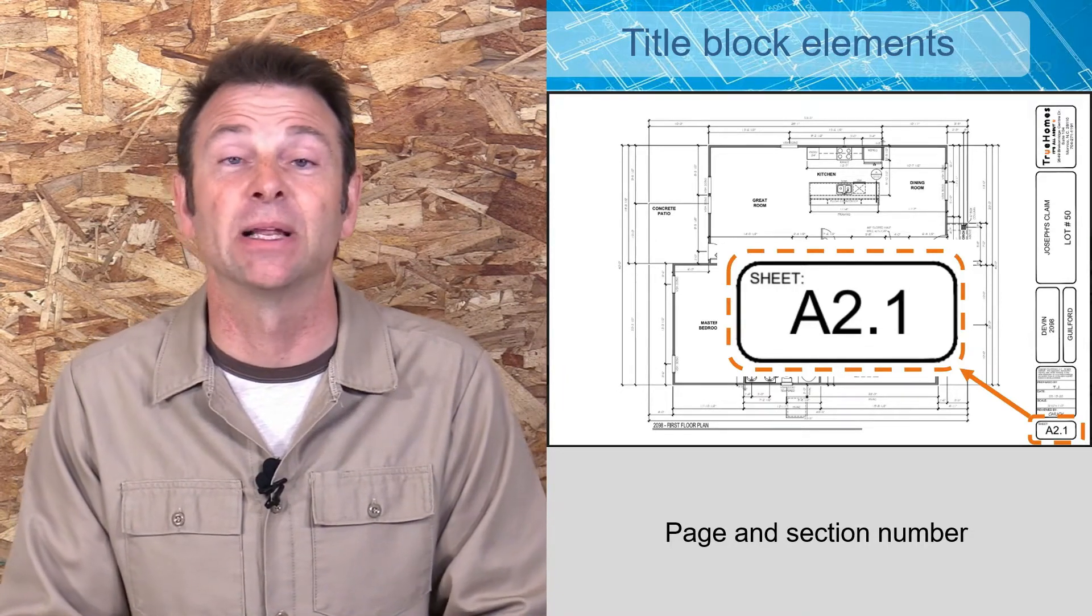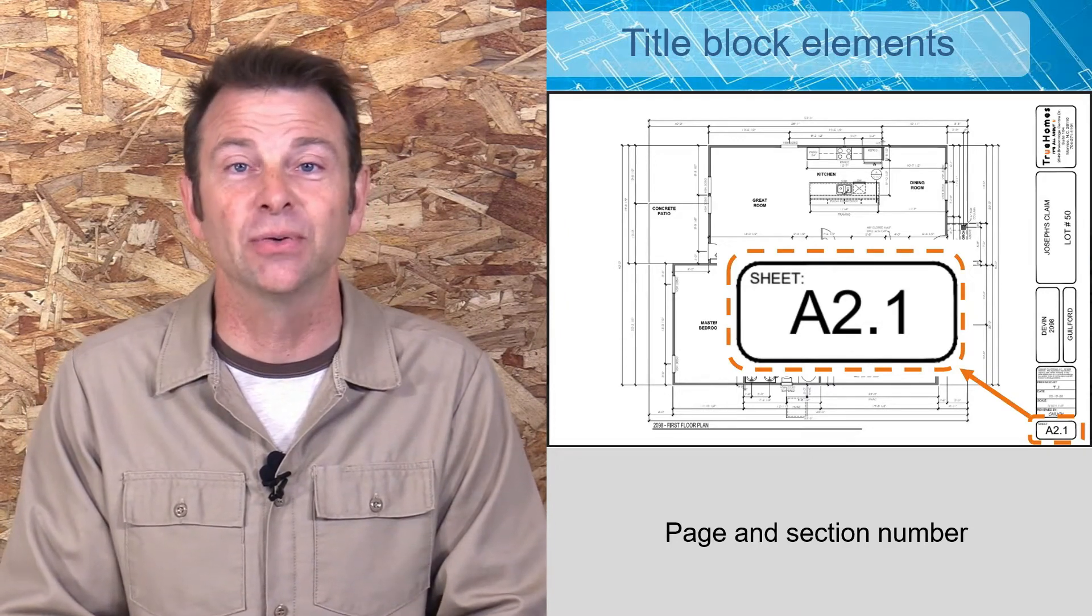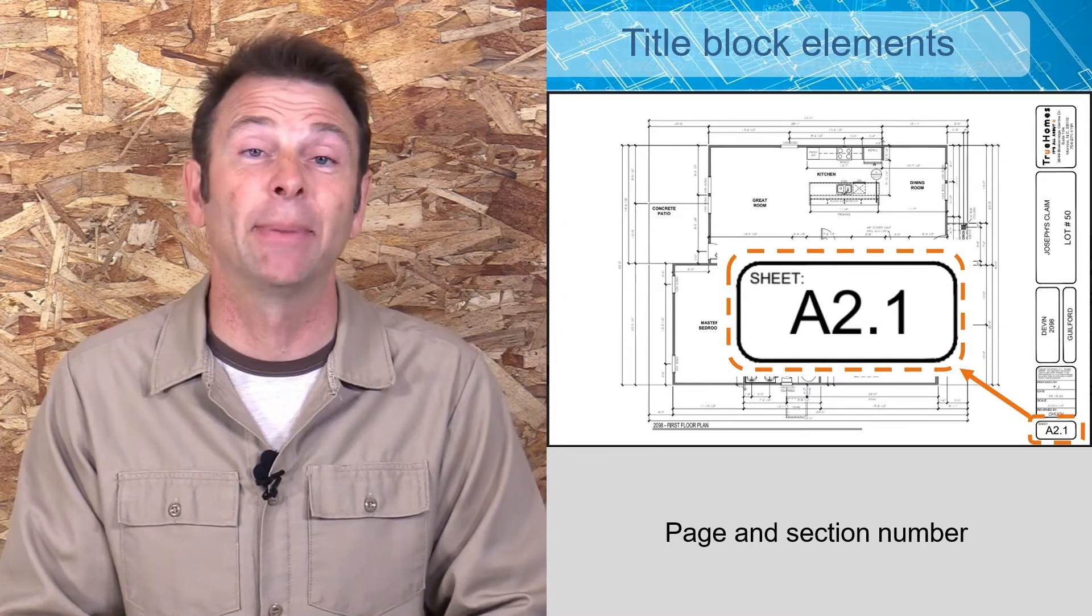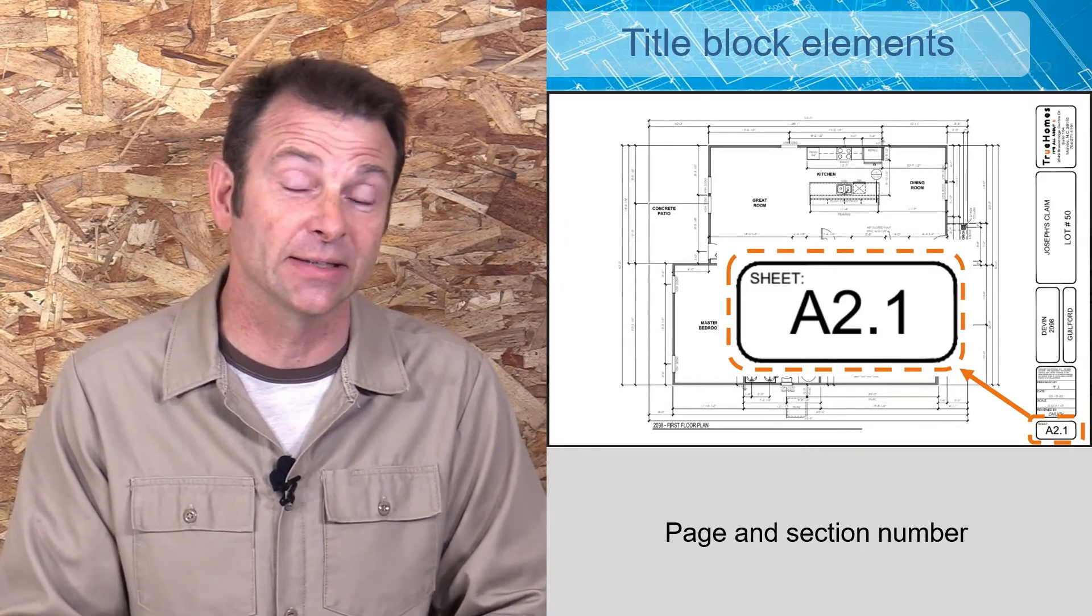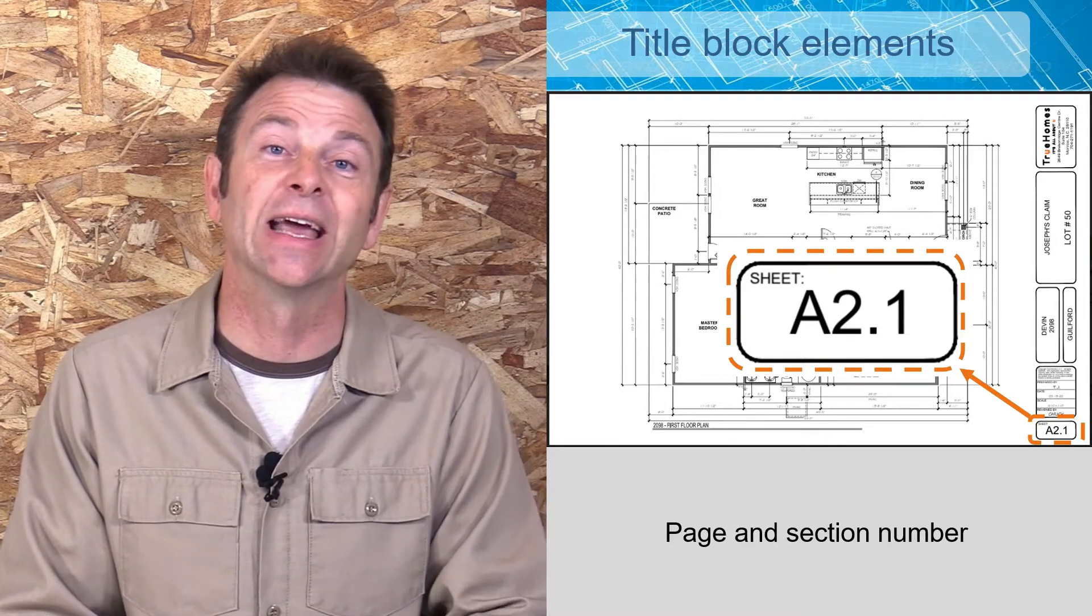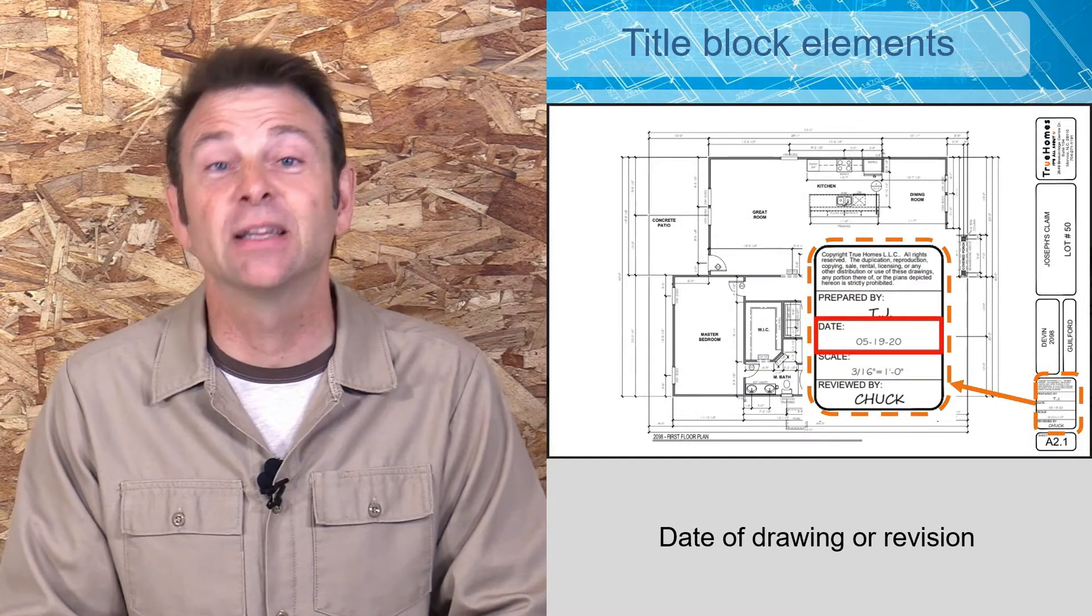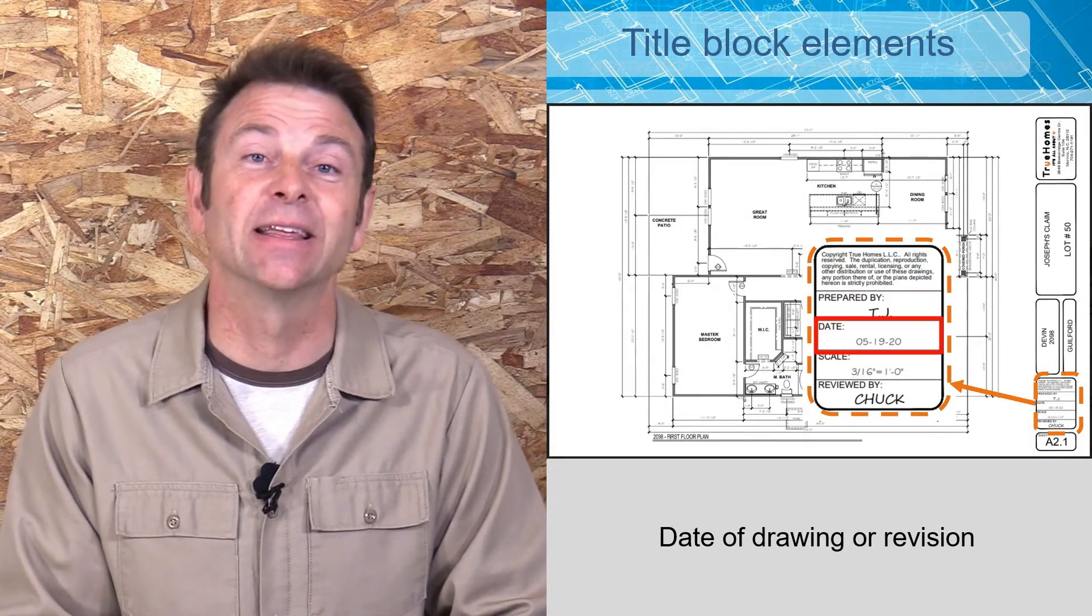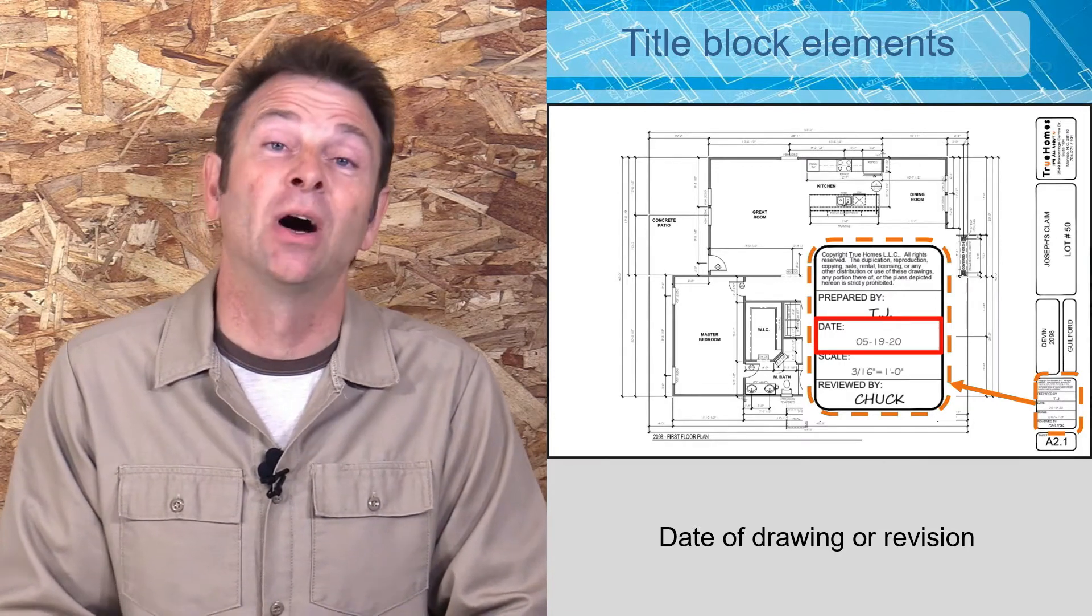Also, the sheet number reference is a very important part of the title block. This is how we're going to index very quickly specific views and specific information about this structure. It's going to save us a lot of time when we go to the table of contents and then go to our sheet number. This is the way we're going to get to what we need very quickly.